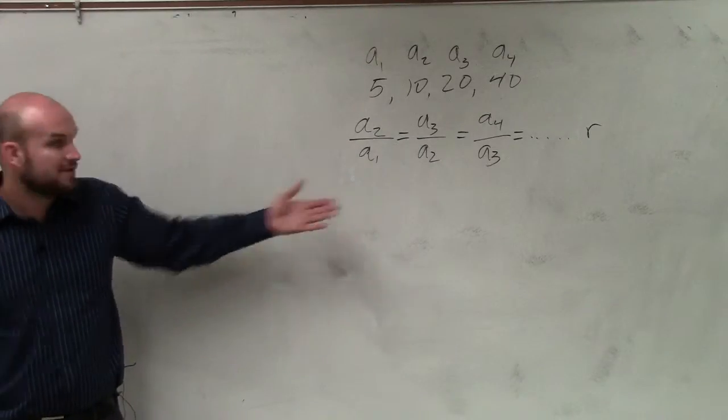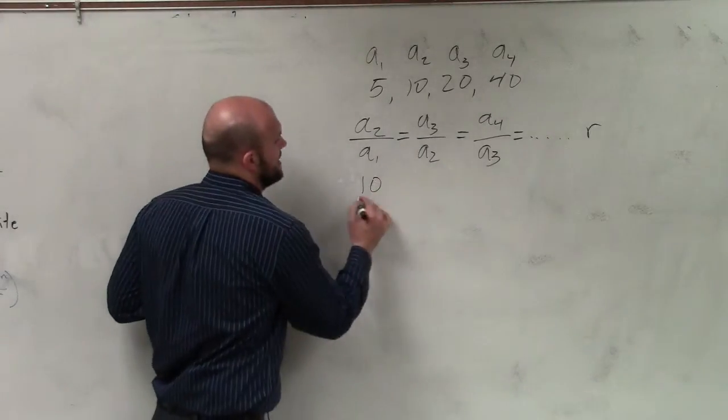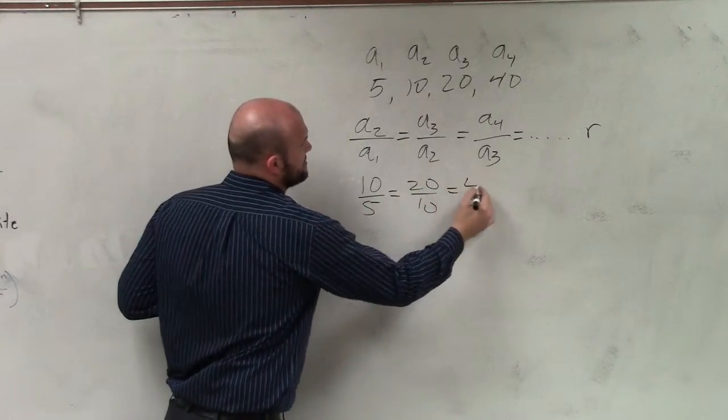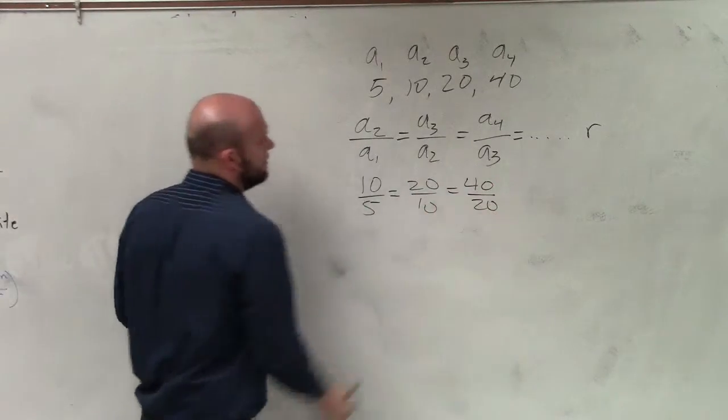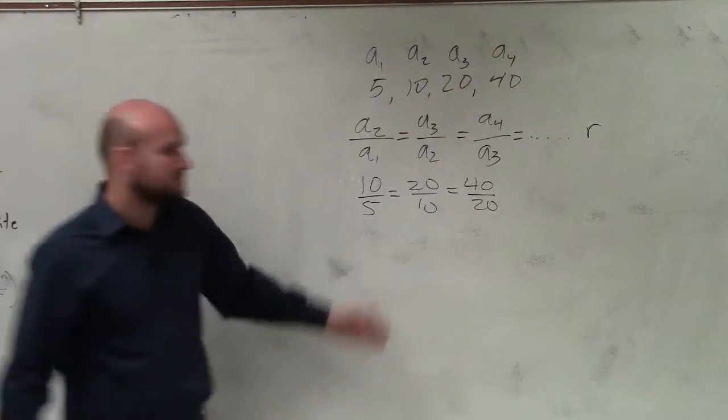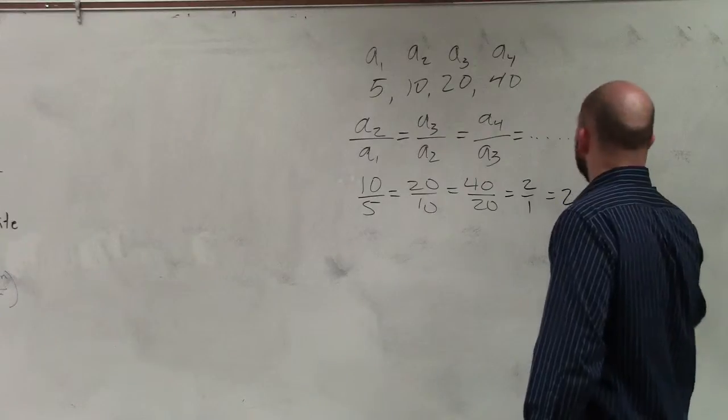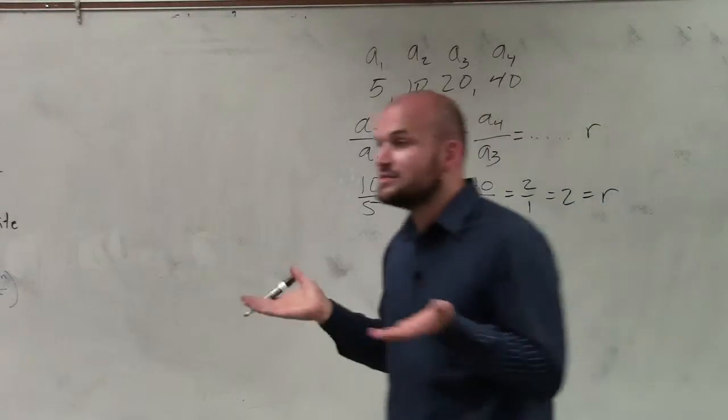Does everybody make sense? So therefore, let's just go and double check. 10 over 5 equals 20 over 10, which equals 40 over 20. And can these all be reduced to the same ratio? Yes. So our common ratio is 2.